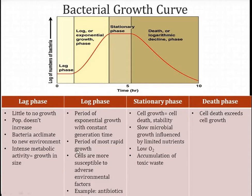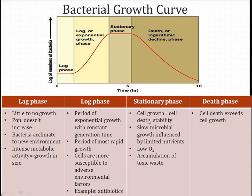In the log phase, cells multiply at a maximum rate and there is a linear relationship between the number of bacteria and time. This continues until nutrients are depleted and oxygen is depleted in the environment, and toxic substances produced by bacterial cells start accumulating. Then comes the stationary phase, the third phase, during which the rate of increase in bacterial cell numbers equals the rate of bacterial deaths — so there is no net increase in cell numbers.